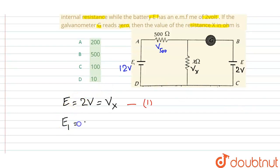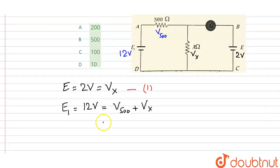So E1 equals 12 volts equals voltage across 500 ohms plus voltage across X ohms. Now students, we know that Vx is what? 2 volts from equation 1. So I will get the voltage across the 500 ohm resistance that equals 10 volts.